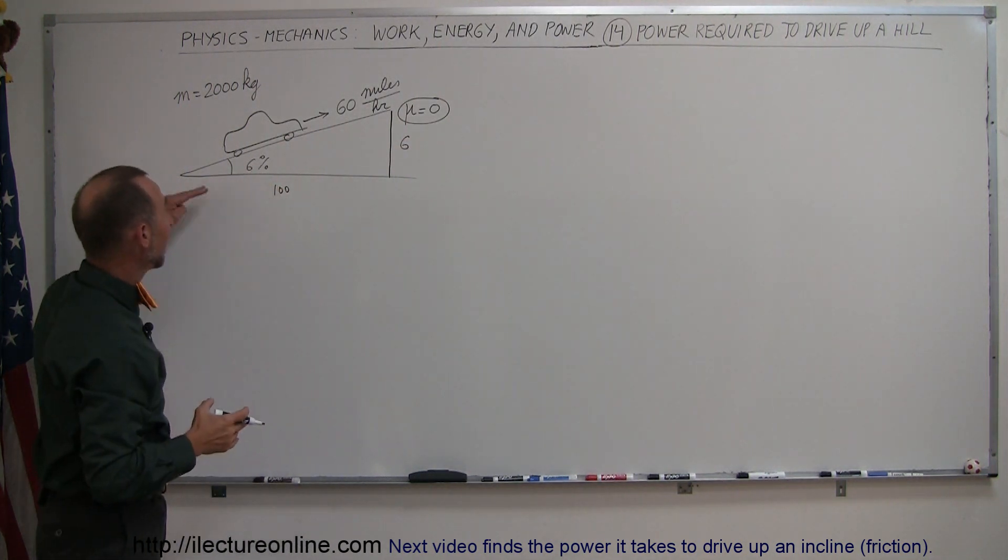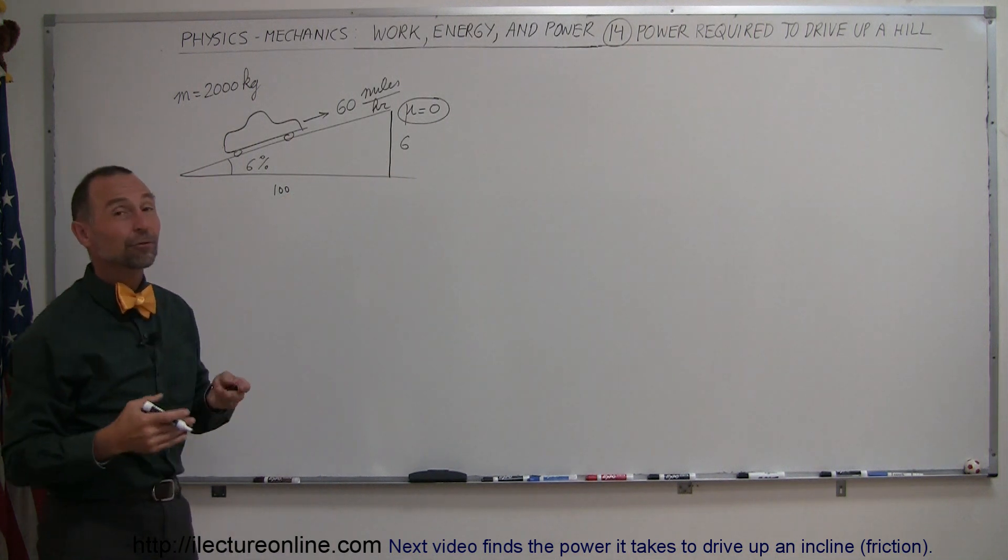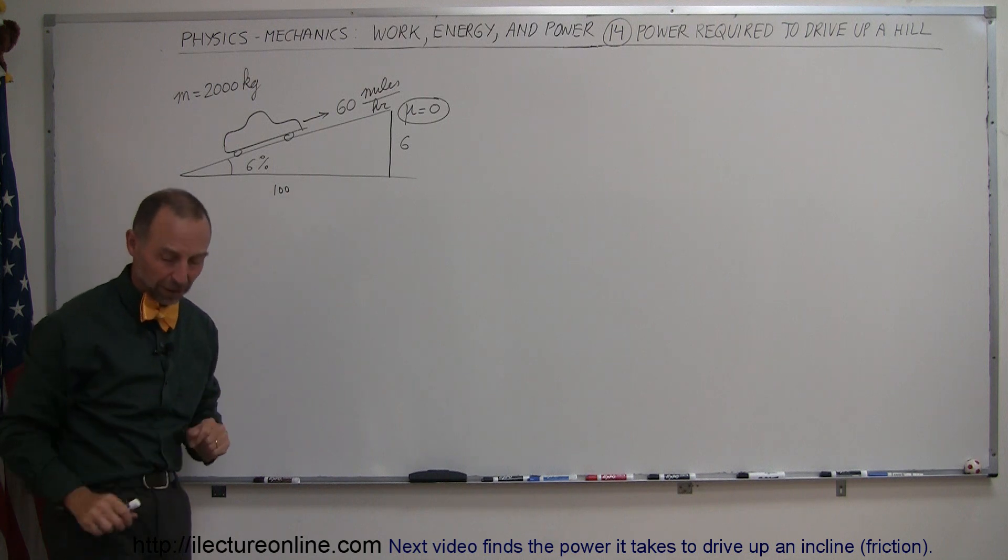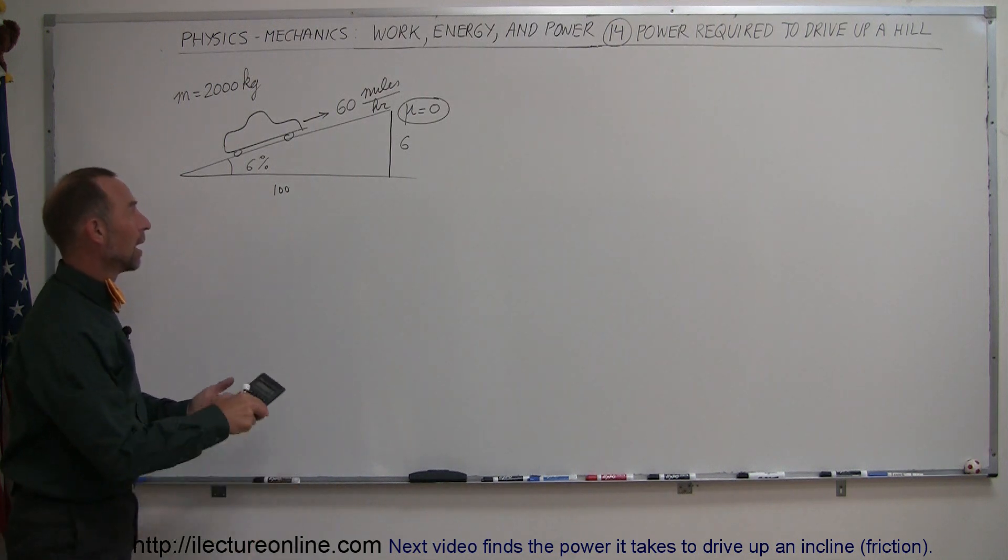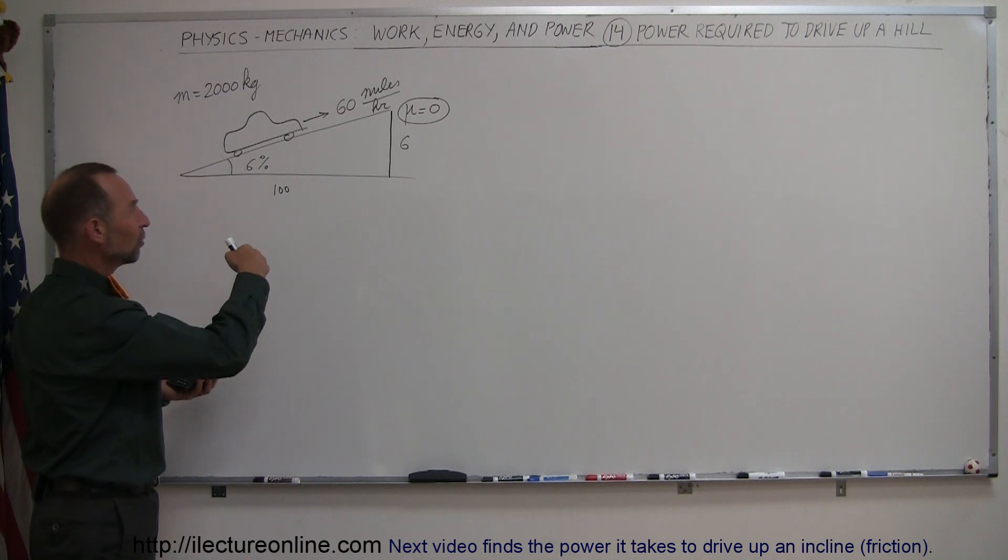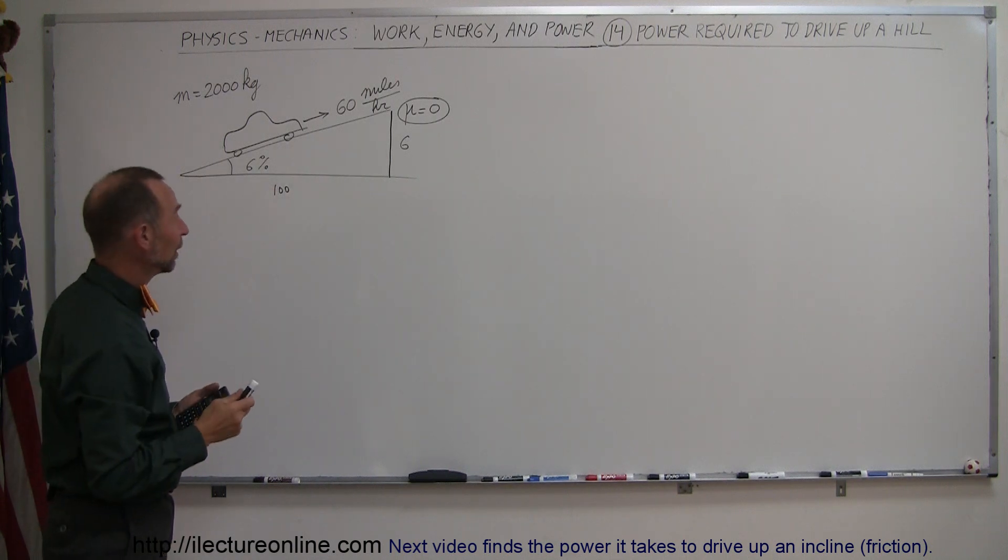So it's basically a 6 to 100 ratio, which means that if it's a 100% hill, then it would be 100 to 100, which gives you a 45 degree angle. So degrees and percentages are not the same when it comes to the steepness of a road. If we take the arc tangent of the opposite over adjacent, we can actually turn that into an angle.